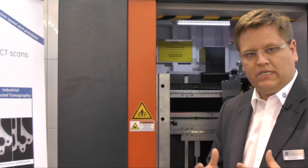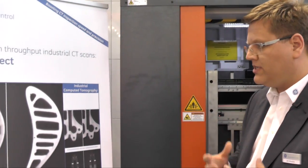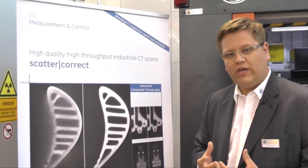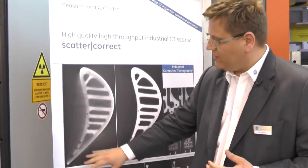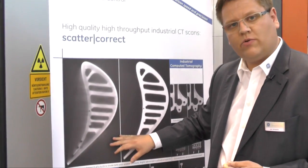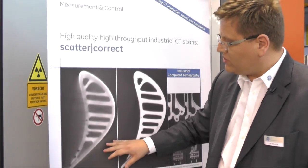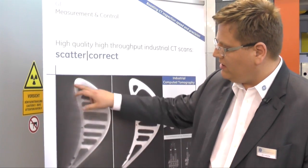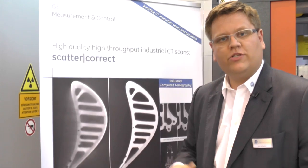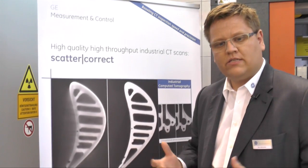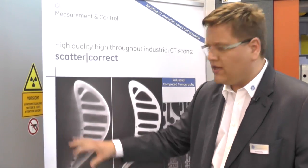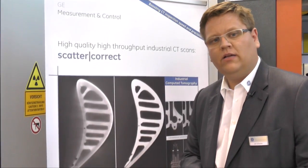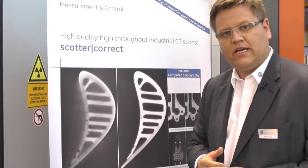As you might know from doing CTs on high-density materials or materials of large wall thicknesses, we suffer from scatter radiation. This example shall give you an idea of what scatter radiation is causing. We see here in the air grey values which simply do not exist — it is simply the effect from scatter radiation, a typical result from flat panel based CT scans.